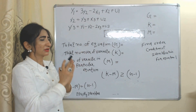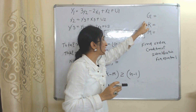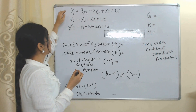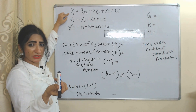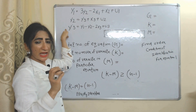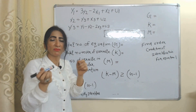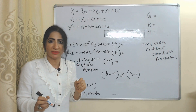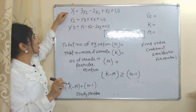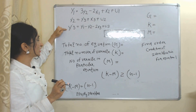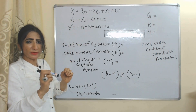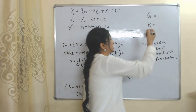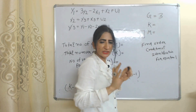Now we will solve our question. First, we will find the value of G. G means the total number of equations in the model. Here you can see we have a total of 3 equations in the model — equation 1, 2, and 3. As we discussed earlier, the number of equations always equals the number of endogenous variables. Here we have 3 endogenous variables: Y1, Y2, and Y3. So the value of G is equal to 3.